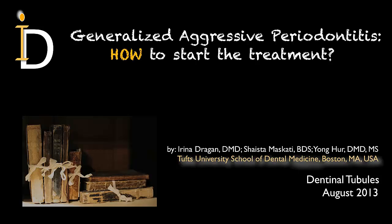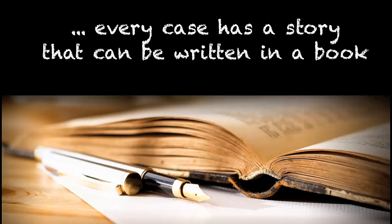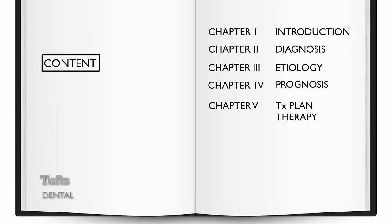Good afternoon. My name is Irina Dragan and I want to start this webinar by thanking for the kind invitation. Today I'm going to present one of the cases that I've been treating at Tufts University School of Dental Medicine in Boston, in cooperation with my colleagues Dr. Mascati and Dr. Herr. The topic today is how do we start the treatment when we're dealing with a generalized aggressive periodontitis case, and we structured this presentation as a story, so we're going to have different chapters that we're going to discuss today.